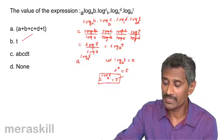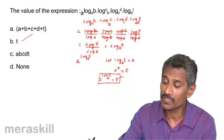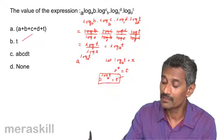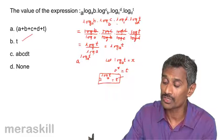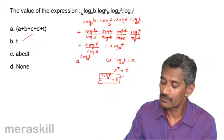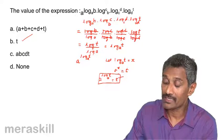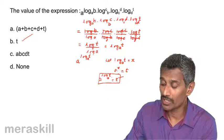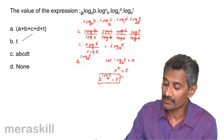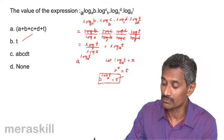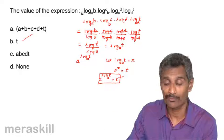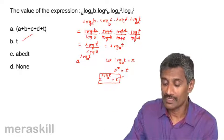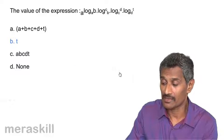So the whole expression simplifies to t. Among the given options, t is the right answer. To summarize: simplify the exponent using change of base — all intermediate logs cancel leaving log_a(t) — then use the identity a^(log_a(t)) = t.